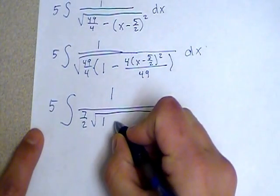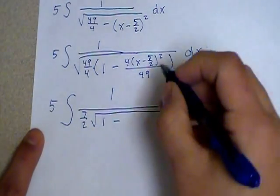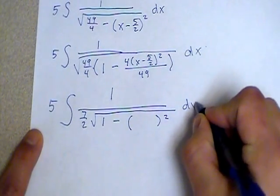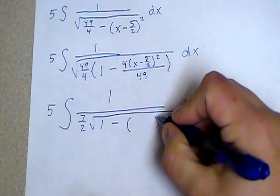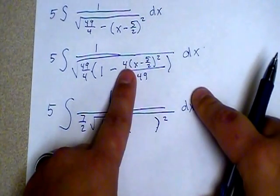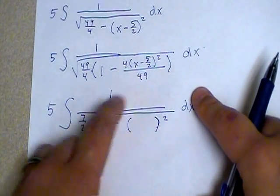But I have a 1 in place where I need it. I want this to be one thing squared. And in order to make this second piece be one thing squared, I'm going to need to realize that that's a 2 squared and that's a 7 squared.